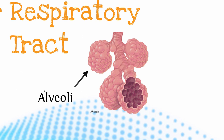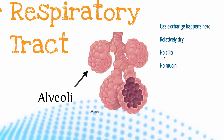Now, once you get to your alveoli, there are a few things we need to know. First, gas exchange happens here — this is where the magic happens. Next, it's a relatively dry environment. You don't get cilia or mucin in this area. You have a little bit of fluid that helps with the surface tension of the alveoli, but ultimately this is a dry environment so that gas exchange can occur. Cilia and mucin are only going to be occurring above these systems. So whereas before you had cilia beating foreign particles upwards and mucin trapping them, we don't have that defensive mechanism here at the alveoli.